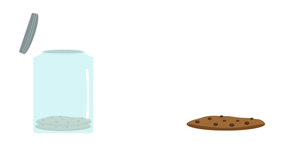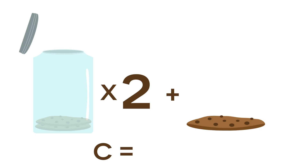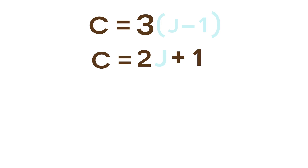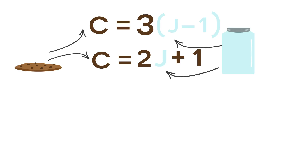Let's use more information given to us to create another equation. If we put two cookies into every jar, then we're going to have one cookie left over. So if we multiply each jar by two, that gives us the total number of cookies plus one left over. So C is equal to two J plus one. Now we have two equations for our two variables, cookies and jars, and we can solve this system of equations to find exactly how many of each we have.